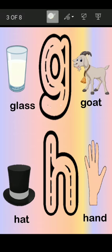Now how are we going to write letter G? First write letter C, then go up, then come down and down, then turn a little like this. Letter G.